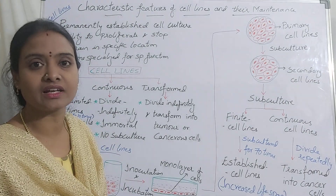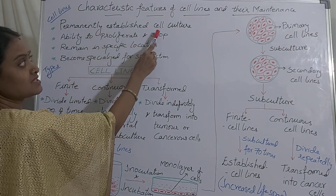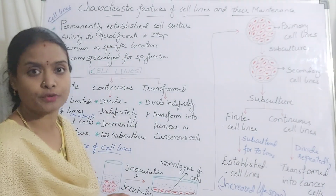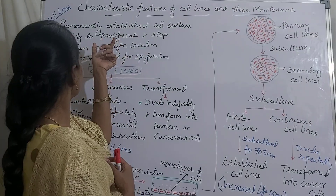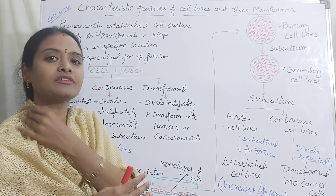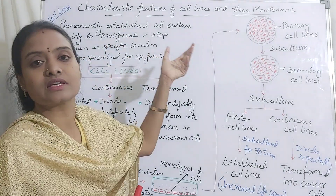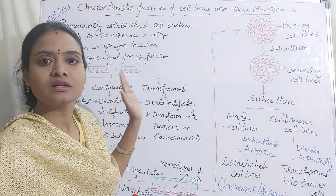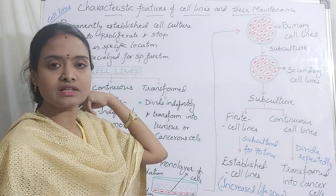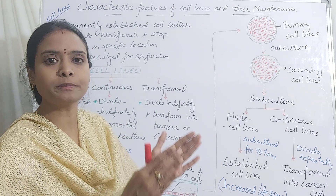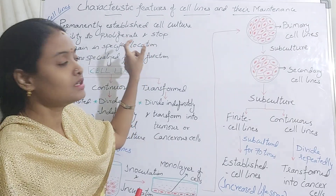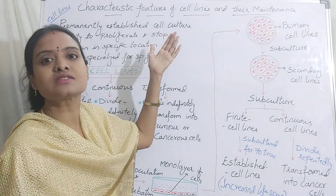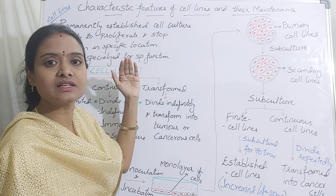What do you mean by cell line? Cell lines are permanently established cell cultures which have ability to proliferate and stop. Proliferation means to rapidly divide. These cells are rapidly dividing cells. They will be dividing till they reach their senescence. These cells have ability to divide for a definite number of cell cycles. Each and every cell will have a definite or specific lifespan. Only up to such cell cycles will the cell divide based on their genetics. After that it will stop proliferating, stop dividing, and enter into senescence or result in self-destruction.